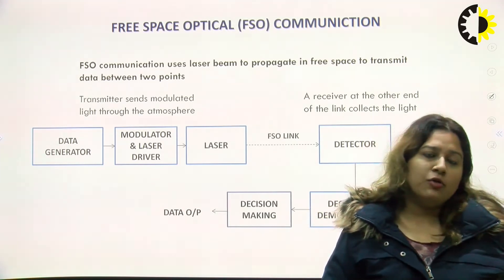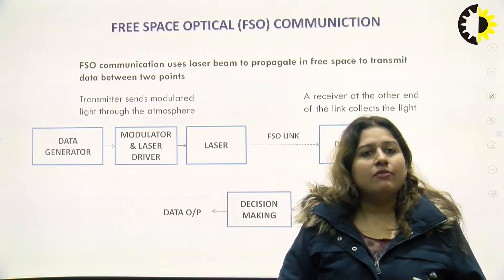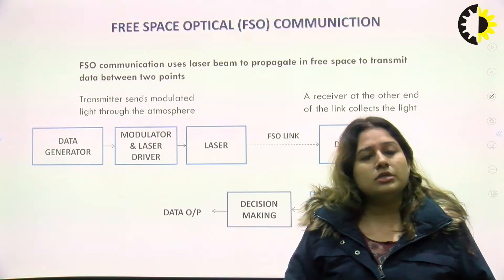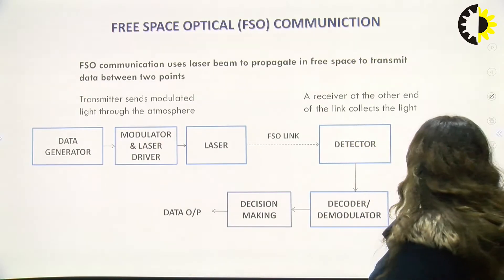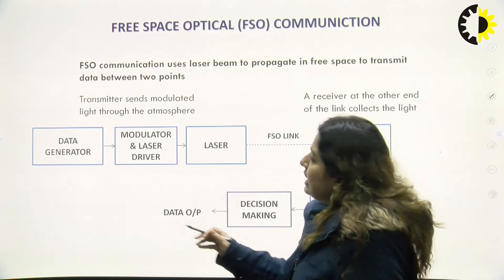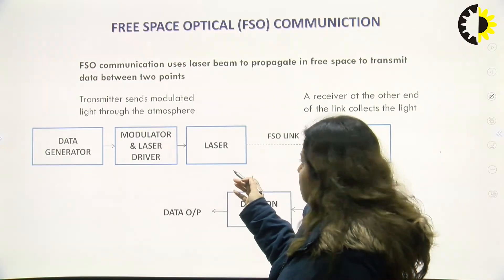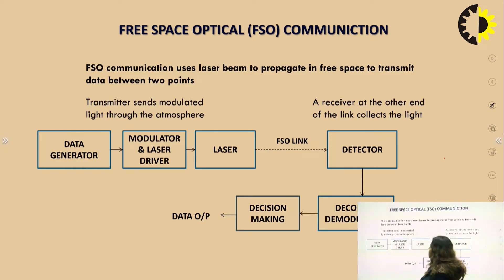The wired medium we have already discussed is optical fiber communication. In optical fiber we discussed single mode fiber and multi-mode fiber, and according to the applications we can use different types of fibers. For wireless transmission, we can use free space optical communication. In the FSO system diagram, there is a data generator at the transmitter side, a modulator and laser driver, then a laser or optical source, a free space optical link, a detector at the receiver side, and a decoder and demodulator. Free space optical communication uses a laser beam to propagate in free space to transmit data between two points.